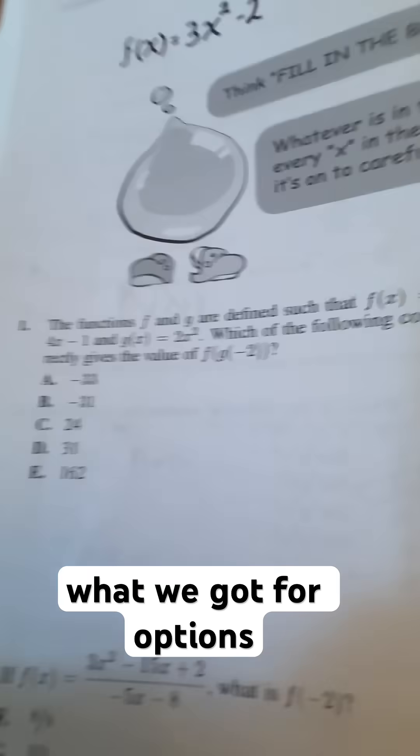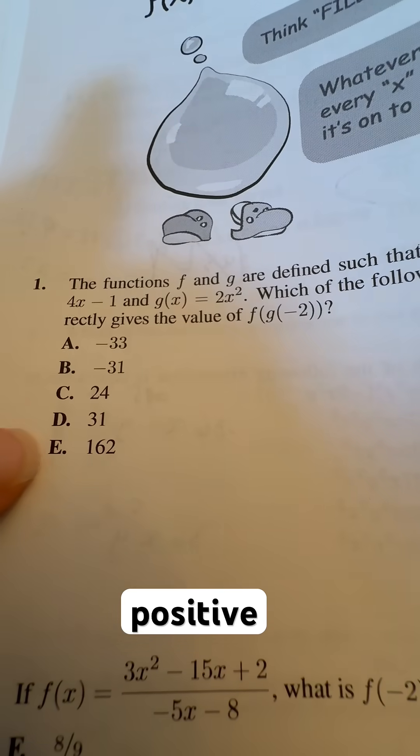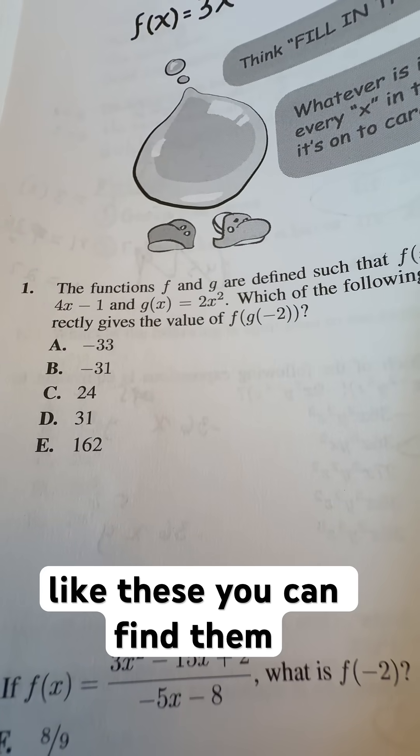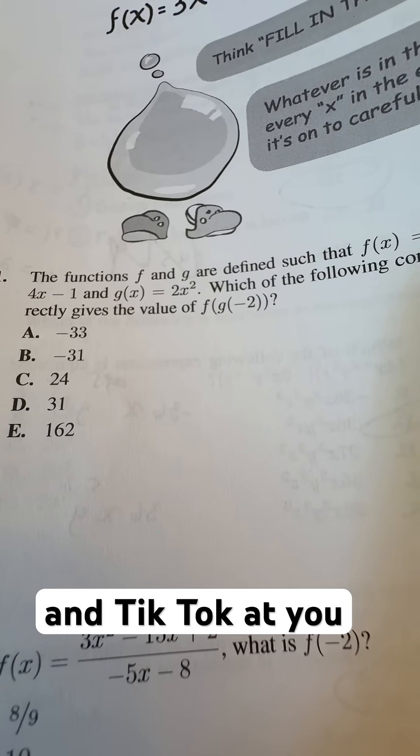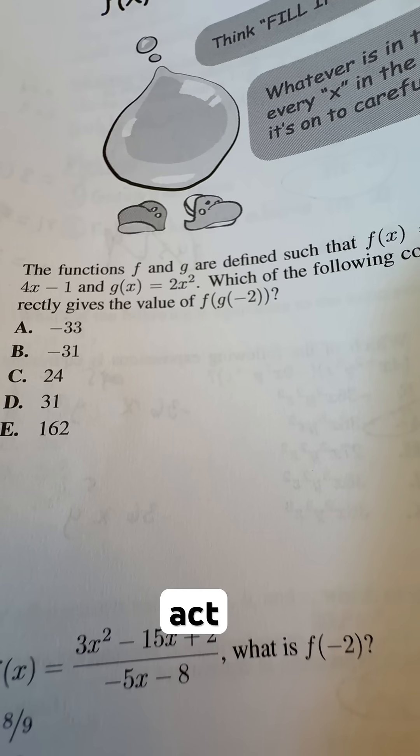So now we look and see what we've got for options, and we do see that a positive 31 right here for D is the correct answer. And if you want more questions like these, you can find them on my YouTube, Instagram, and TikTok at U1Algebra. Check all these out under the SATs and ACT playlist.